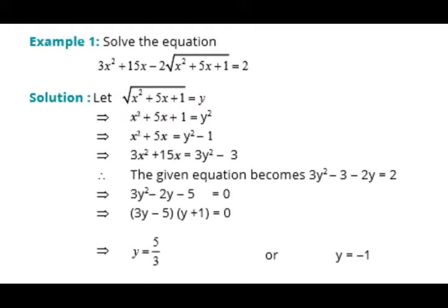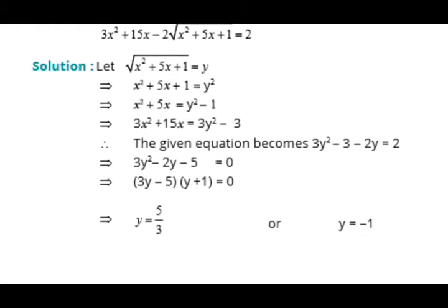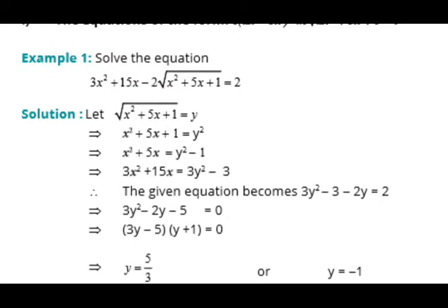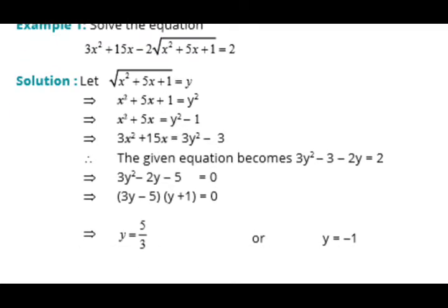The given equation becomes a quadratic equation: 3y² − 2y − 5. Now factorize it — do all steps. For 3y² − 2y − 5, since 3 × 5 = 15, the factors are 5 and 3. After factorizing, we get the values y = 5/3 and y = −1, where y equals the radical expression √(x² + 5x + 1). Set each equal to 5/3 and −1 and then solve.